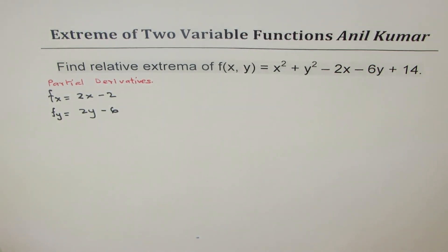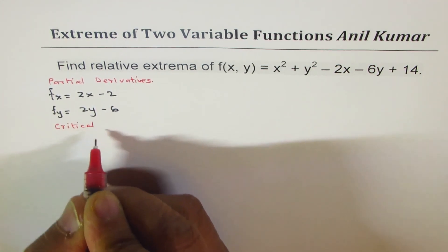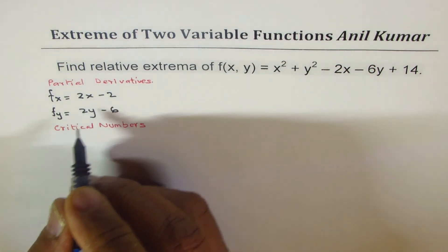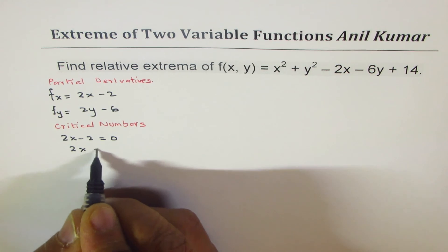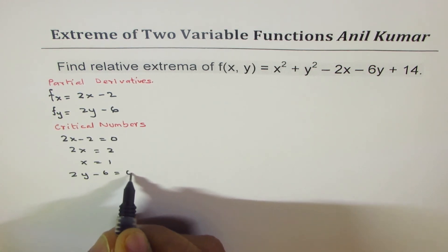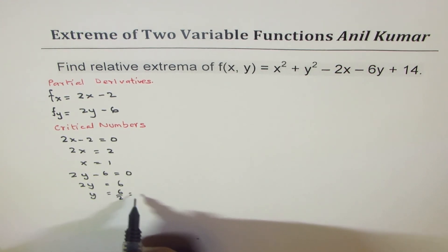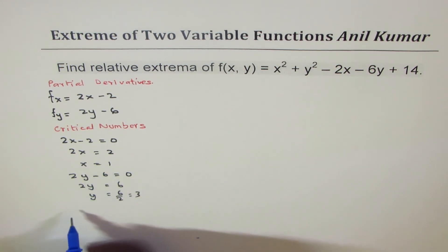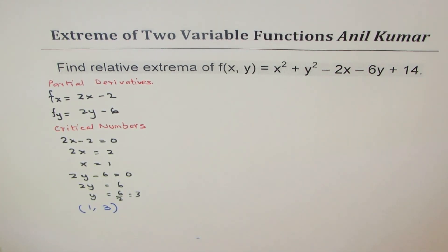To find the critical numbers or stationary points, we equate the partial derivatives to 0. Setting 2x - 2 = 0 gives x = 1. Setting 2y - 6 = 0 gives y = 3. So we have one critical number at (1, 3).